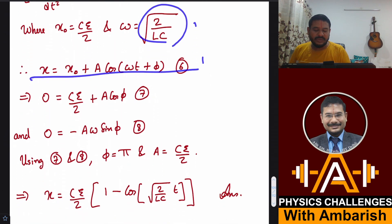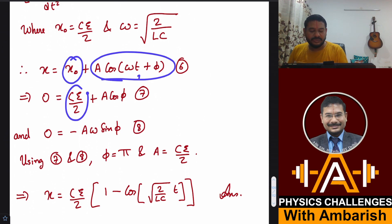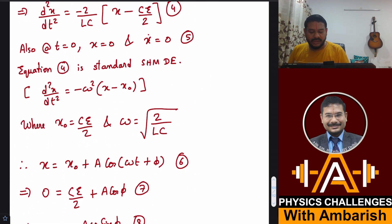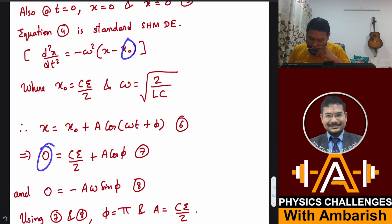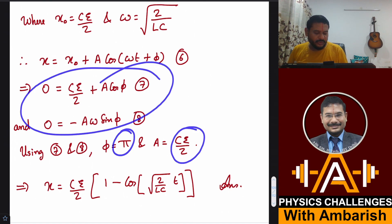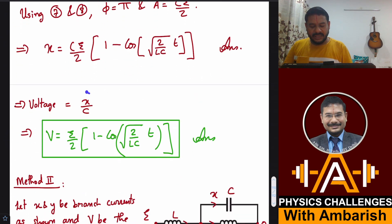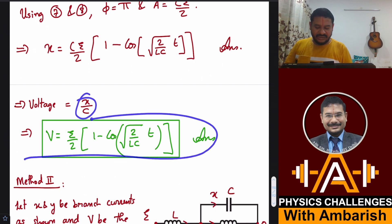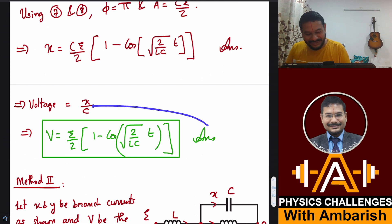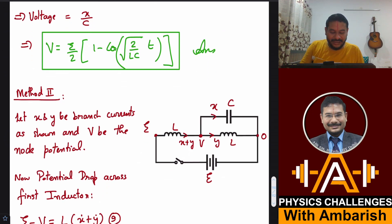The standard solution is x = x₀ + A·cos(ωt + φ). Plugging in initial conditions: at t = 0, x = 0 gives CE/2 + A·cos φ = 0; differentiating and setting t = 0 gives −Aω·sin φ = 0. Solving, A = CE/2 and φ = π. Dividing the charge by capacitance gives the potential difference: V(t) = (E/2)(1 − cos ωt). This matches the answer given at the back of the book, confirming our method works.